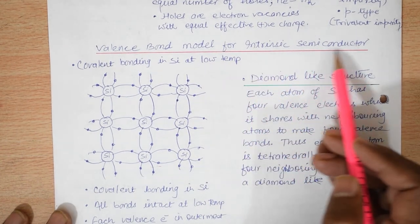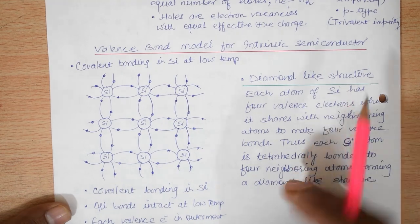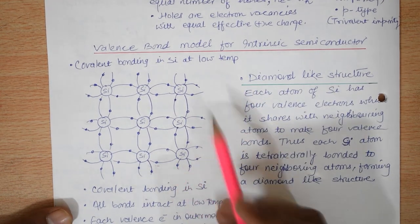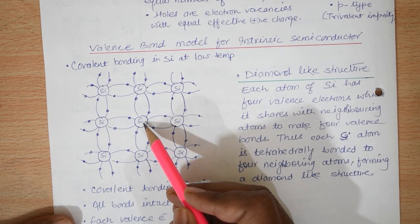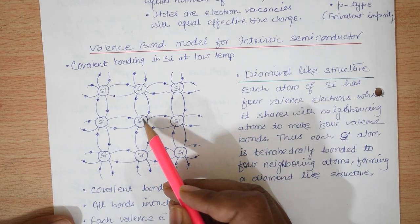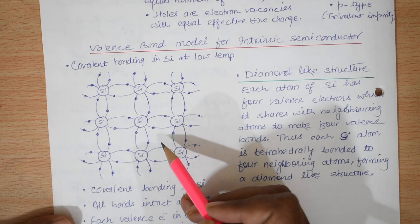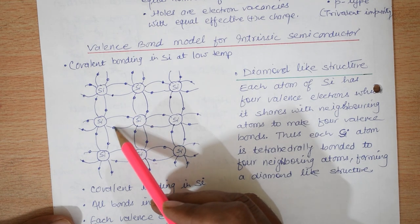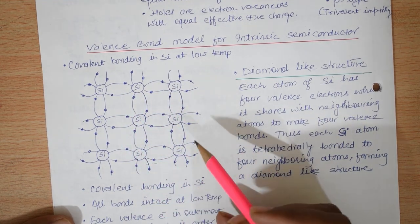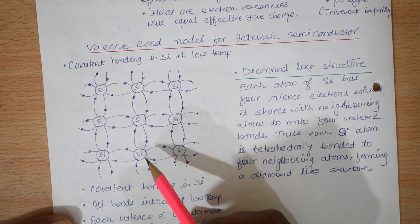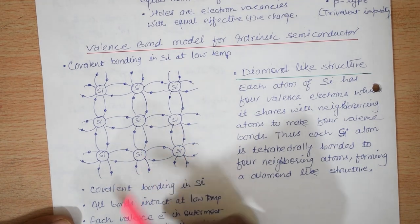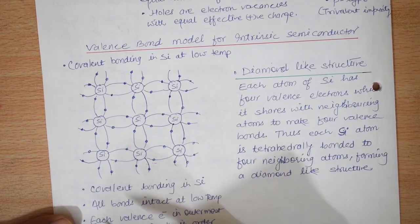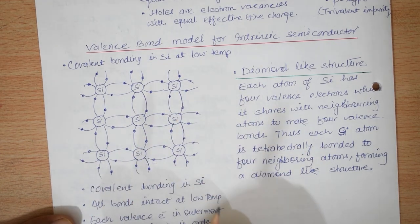Valence bond model for intrinsic semiconductors: let us look at the pure semiconductor silicon at low temperature. This silicon atom has 4 electrons in its valence shell. These 4 electrons are bonded to their neighboring 4 silicon atoms with covalent bonds, so as to complete their octet and gain stability. This structure makes the silicon atom form tetrahedral bonding with 4 neighboring atoms, and therefore this structure looks like diamond — that is why it is called a diamond-like structure.